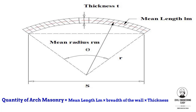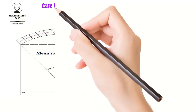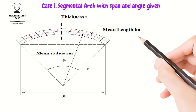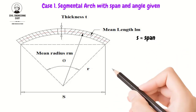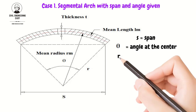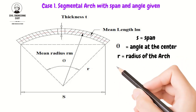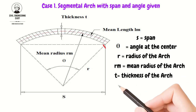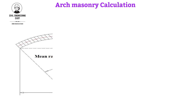Let's discuss the different cases to find out the quantity estimation of different types of arches, together with a short numerical example. Case 1: segmental arch, where span and angle are given. As shown in the figure, the arch of the span subtends an angle theta at the center. The terms are: s represents the span of the arch, theta is the angle at the center, r is the radius of the arch, rm is the mean radius, t is the thickness of the arch, and B is the breadth of the wall.